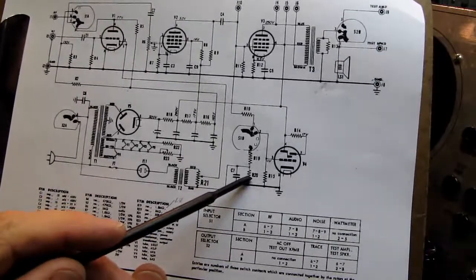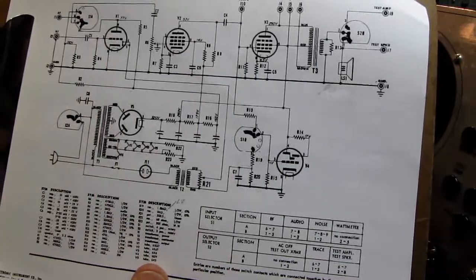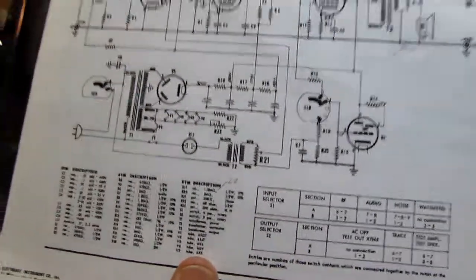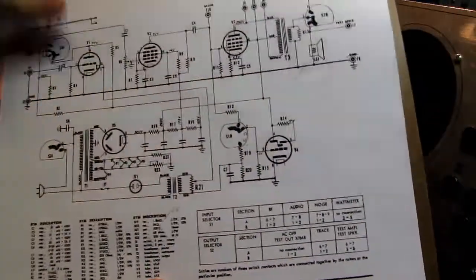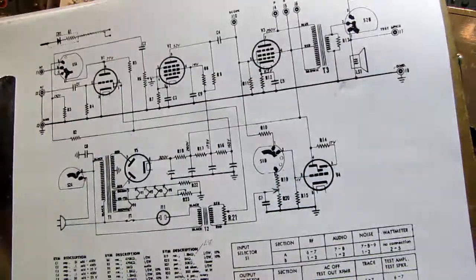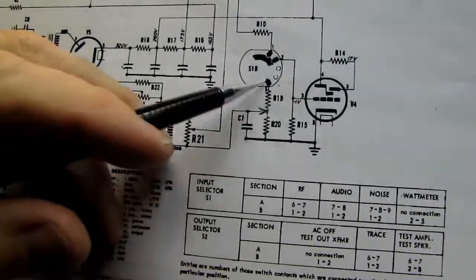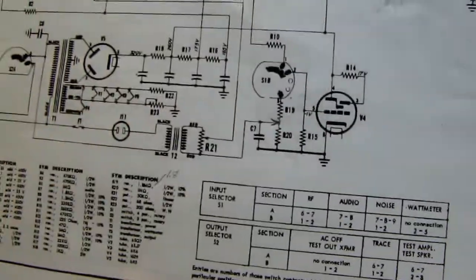We have a 1 megaohm resistor here and a 1.8 megaohm resistor here forming a voltage divider. I took those two resistors out and I put a 3 megaohm potentiometer right here. So now instead of these two fixed resistors there's a 3 megaohm potentiometer.